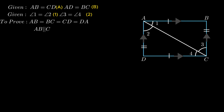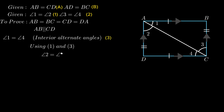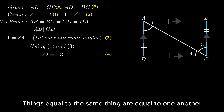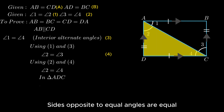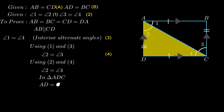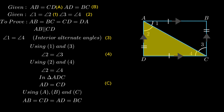Since AB is parallel to CD, angle 1 = angle 4 as interior alternate angles are equal. Using equations 1 and 3, angle 2 = angle 3 by the axiom. Similarly using equations 2 and 4, angle 2 = angle 4. In triangle ADC, sides opposite to equal angles are equal, so AD = CD. Using the equations, AB = CD = AD = BC. Hence ABCD is a square.